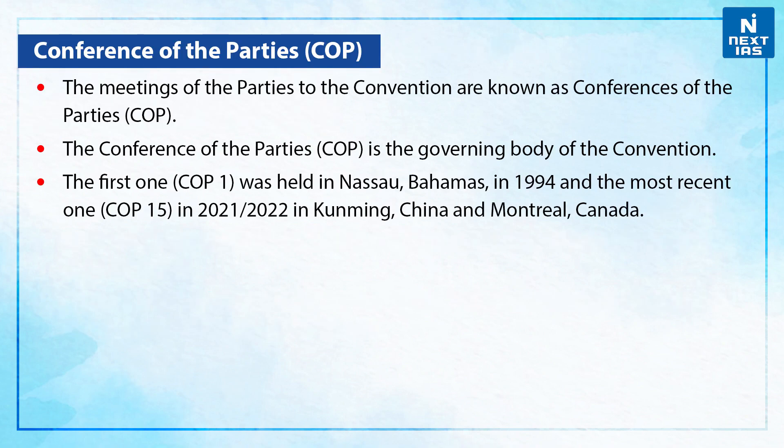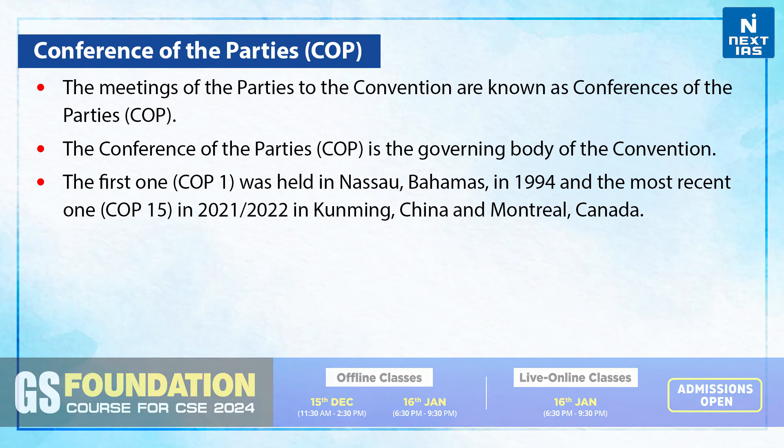The meetings of the parties to the convention are known as the Conferences of the Parties, i.e. the COP. The Conference of the Parties is the governing body of the convention. The first one, COP 1, was held in Nassau, Bahamas in 1994, and the most recent one, COP 15, in 2021–22 in Kunming, China and Montreal, Canada.